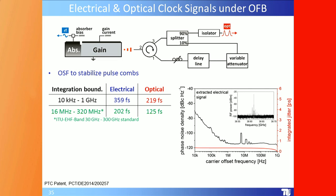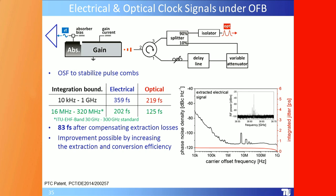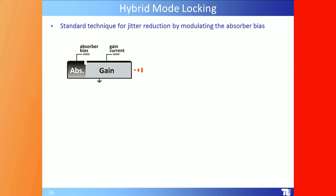For clock signal generation, between integration boundaries of 16 MHz and 320 MHz in the ITU EHF band at 30 GHz, the electrical jitter is 200 femtoseconds and the optical is 125 femtoseconds — improving to 83 femtoseconds after compensating extraction losses. Optical feedback enables low-cost, low-jitter microwave generation.